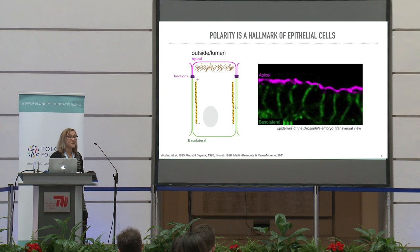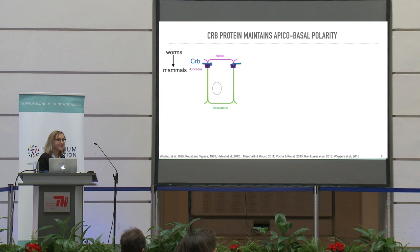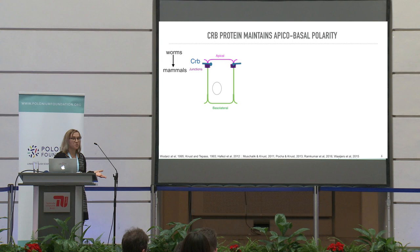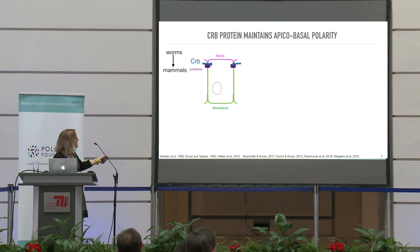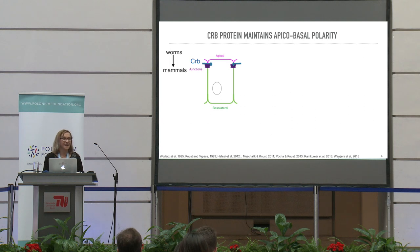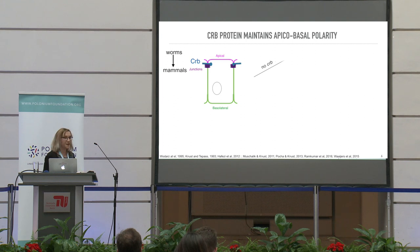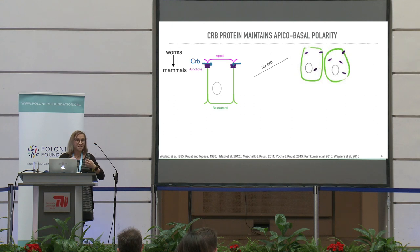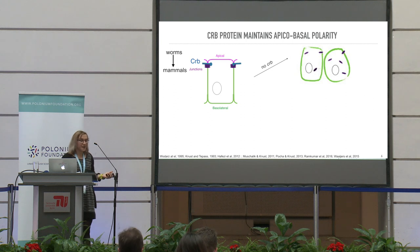One of the proteins that is extremely necessary to maintain polarity is Crumbs. It is a transmembrane protein, shown here in blue, highly conserved across basically all animals — from worms to us. When this protein is not present, what we see is that polarity is lost, the connections between the cells fall apart, and the whole tissue breaks apart as well.